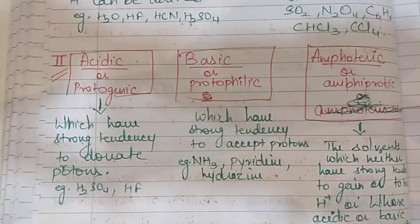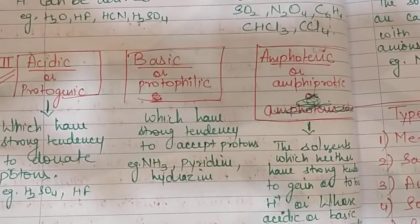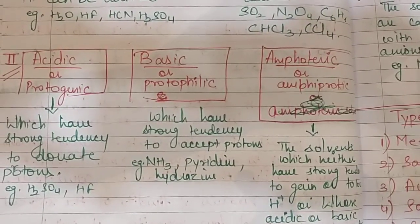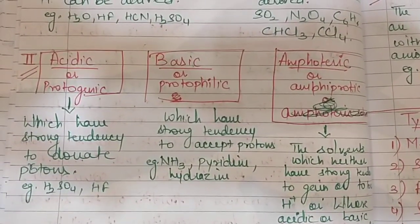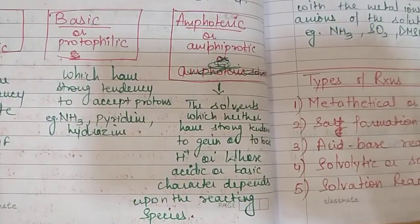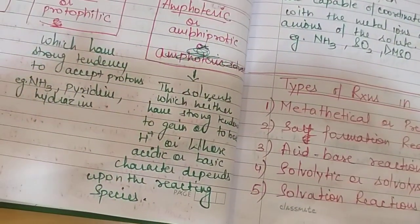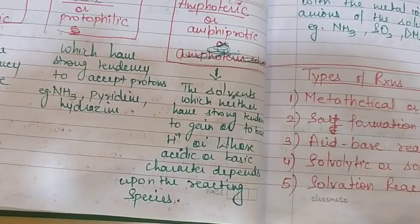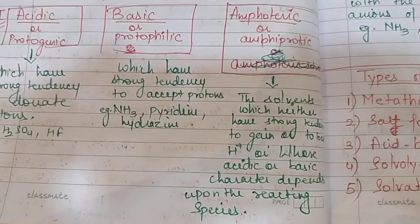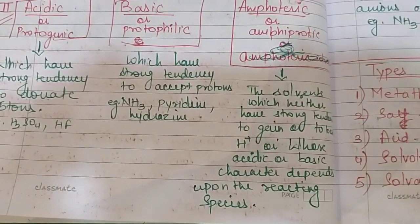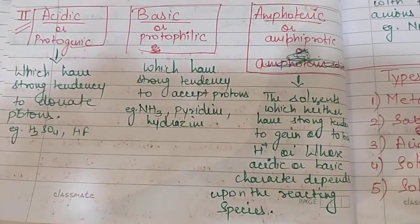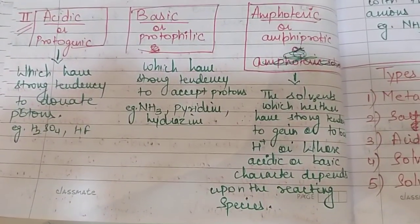The second category is acidic or protogenic solvents, which have a strong tendency to donate protons — examples are H2SO4 and HF. Basic or protophilic solvents have a strong tendency to accept protons. Amphoteric solvents neither have a strong tendency to gain nor lose H⁺; their acidic or basic character depends upon the reacting species. If the reacting species is acidic, the solvent behaves as basic, and vice versa. So amphoteric solvents can exhibit both properties based on the nature of the reacting species.